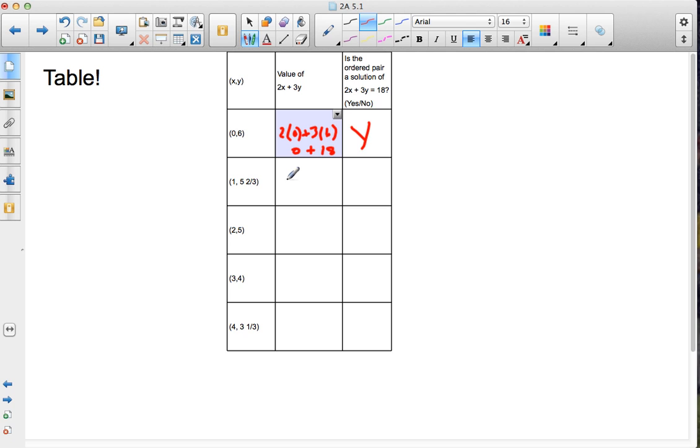If I take the next one, 1, 5 and 2 thirds. So I have 2 times 1 plus 5 and 2 thirds times 3. 5 times 3 is 15, so I have 17 thirds for my y times 3 over 1. 3's cancel and I'm left with 17. So I have 2 plus 17, which is 19. So the answer here is no. The ordered pair is not a solution.